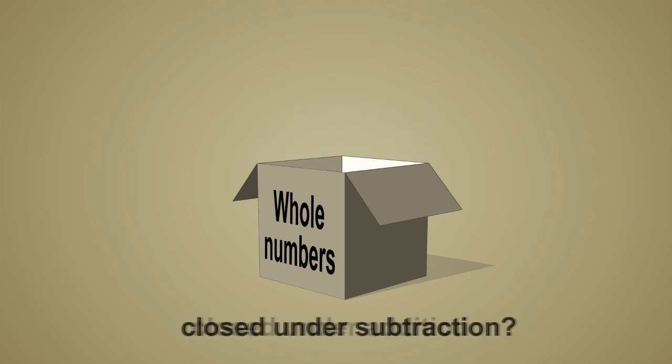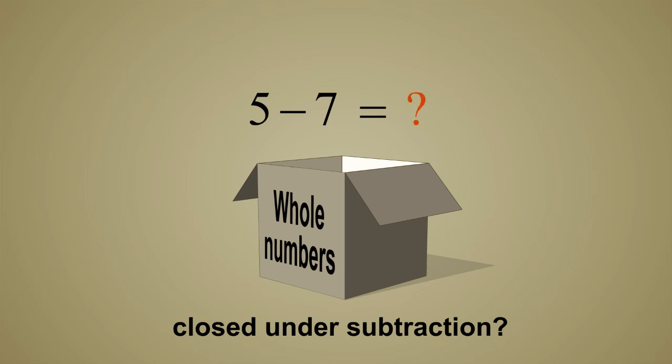But, are the whole numbers closed under subtraction? If you subtract a larger whole number from a smaller whole number there is no whole number which can represent the result. This is because we would need a negative number to represent the result and whole numbers do not include negative numbers.